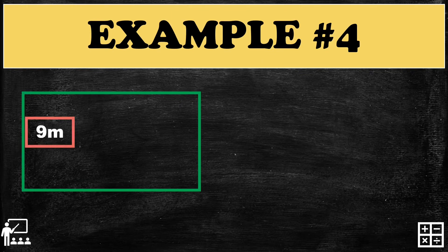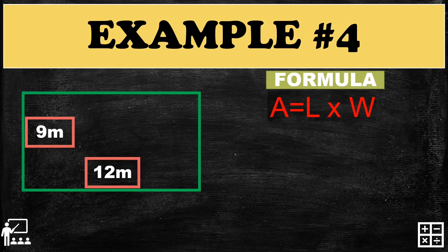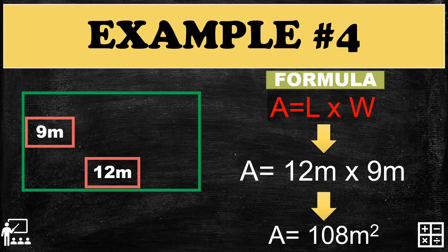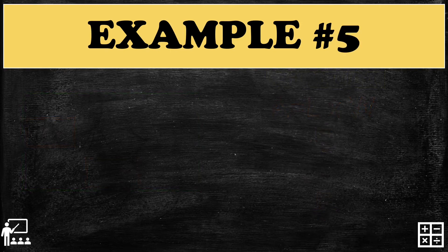Example number four: our rectangle has a width of nine meters and a length of twelve meters. Using the formula A equals L times W, we substitute: twelve multiplied by nine. Twelve times nine gives you 108, so the area is 108 meters squared. Remember to use the proper unit — squared meters.